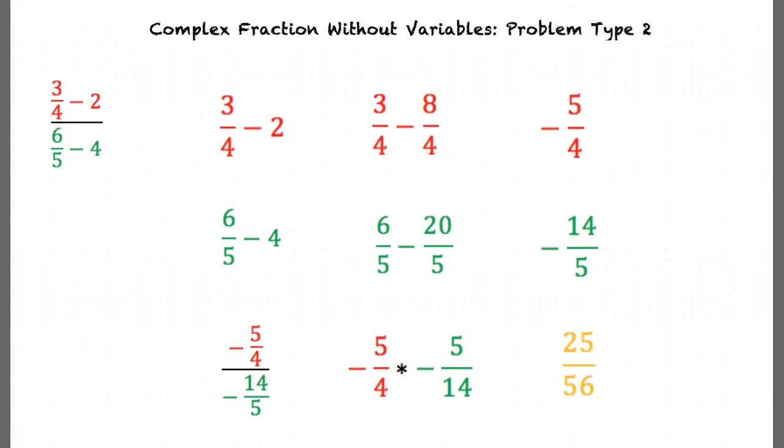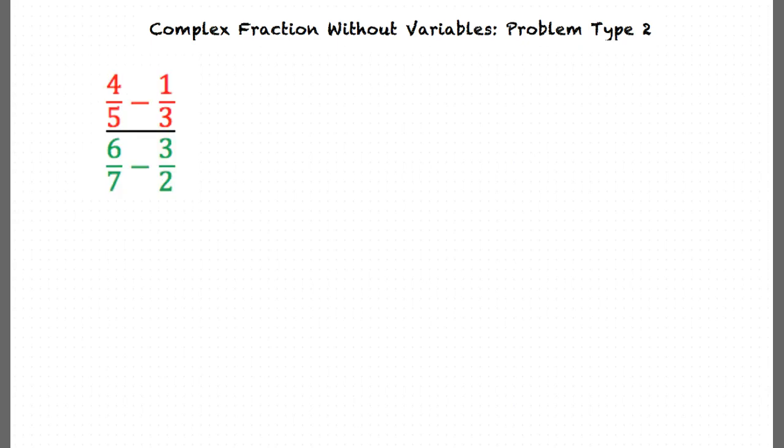This will be our final answer. Of course. Our next example will be 4 over 5 minus 1 over 3, divided by 6 over 7 minus 3 over 2.